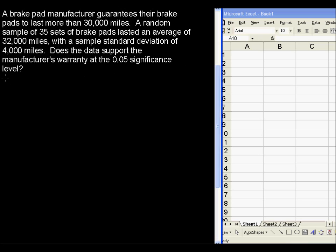This is a hypothesis test about a mean, and the mean that we're testing about is the 30,000 miles. Is it greater than 30,000 miles, or is it just equal to or less than 30,000 miles?